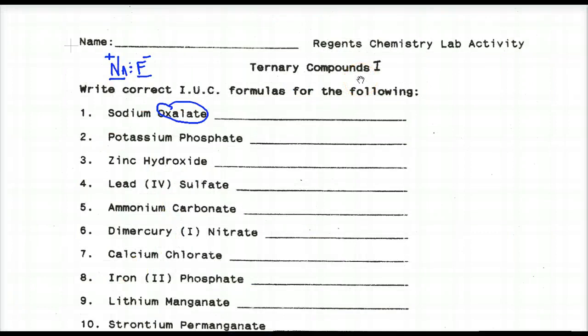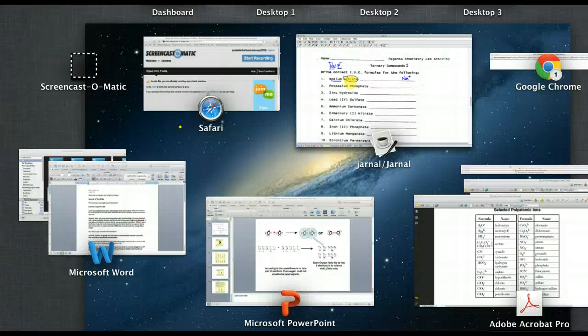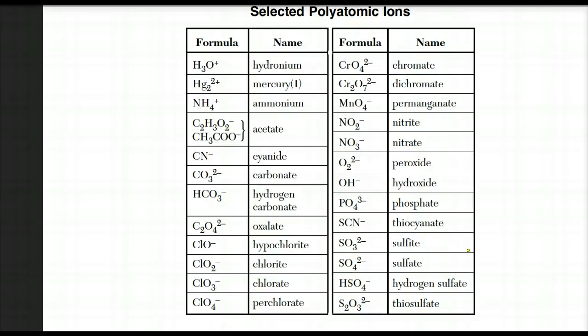So let's name these compounds. Sodium oxalate. We look at sodium, and we know that sodium likes to become positive 1. If I don't know that, we go to the reference table and look up sodium. It'll show only this positive, which means it only becomes positive 1. Oxalate - what the heck is an oxalate? That's another name for Table E. I call Table E the what-the-heck-is-that table.